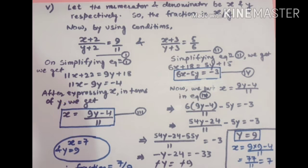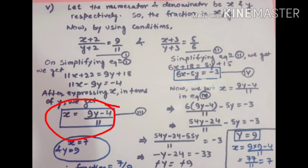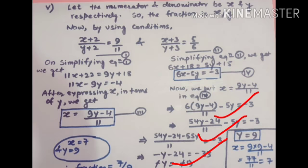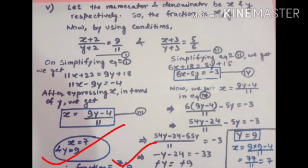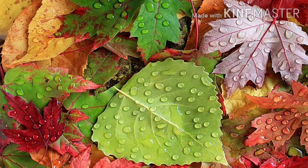Simplifying equation 2 gives equation 4: 6x minus 5y equal to minus 3. Substituting x equal to (9y minus 4)/11 into equation 4 and solving gives y equal to 9. Putting y equal to 9 back gives x equal to 7. So the fraction is 7/9. In this video we discussed problems from exercise 3.3. You can solve the rest of the questions in this exercise, and in the next video we will solve questions from exercise 3.4.